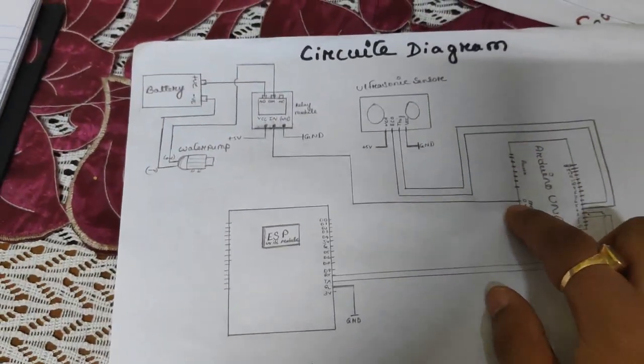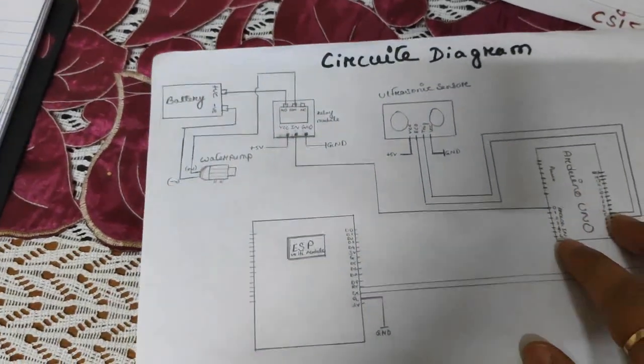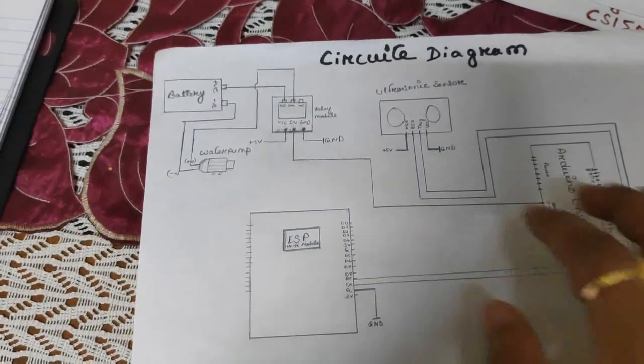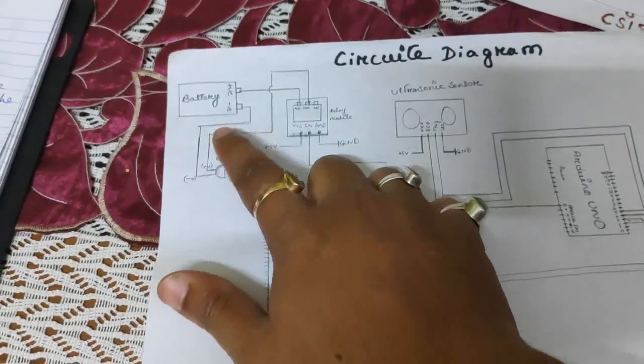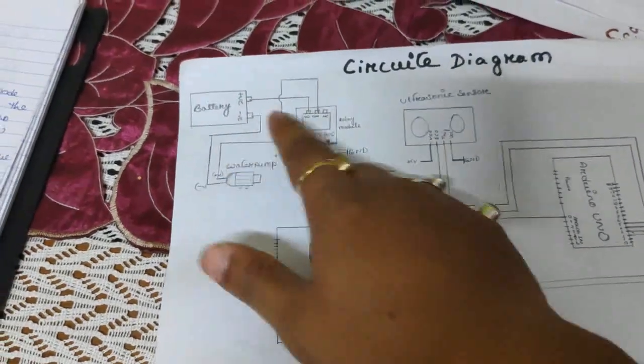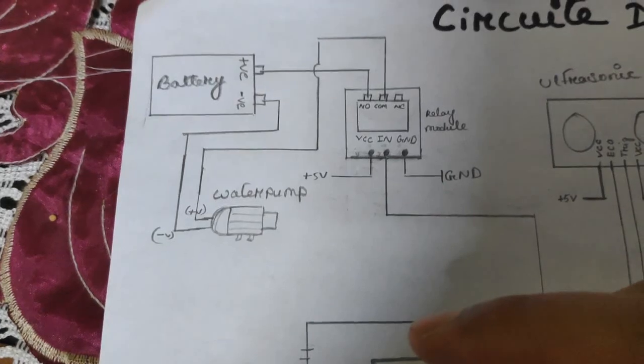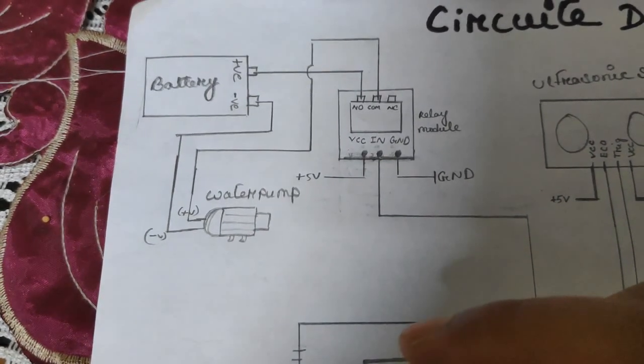So these are the connections. So this is the battery. The battery. And this is the water pump. You can see here how we connected each other. So this is our circuit diagram. Thank you.